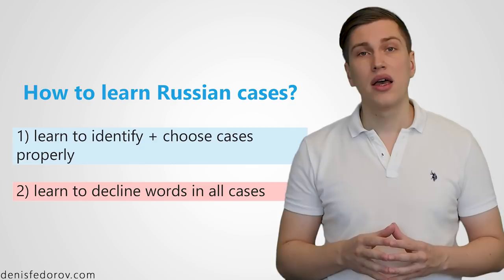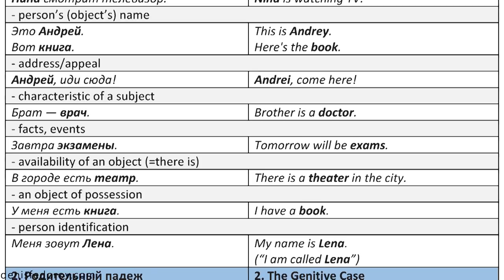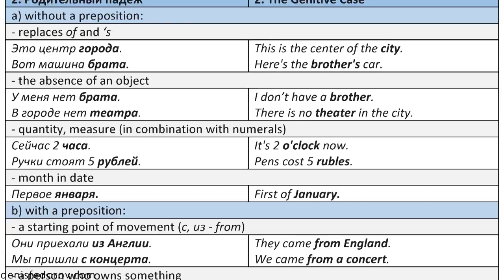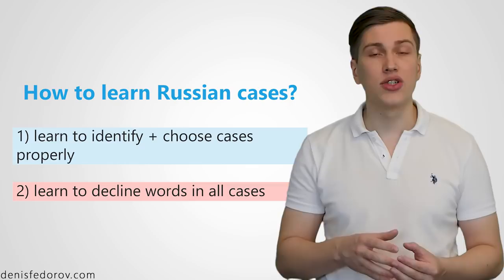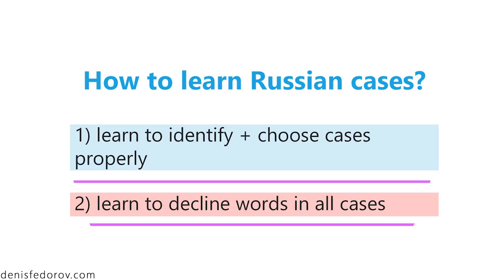As for point one — how to properly decide on the case — we spoke about this in the previous video. I gave you a list of 30 most common case situations. Working with those situations and practicing will enable you to start choosing proper cases. In this video we will be working on the second point: word alteration.